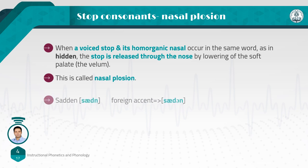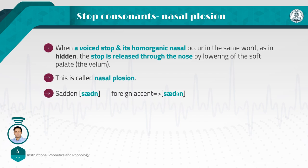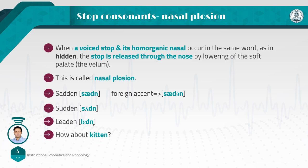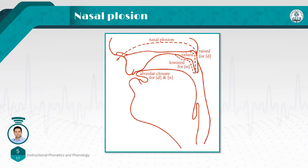Some examples of nasal plosion are 'sadden' and 'laden.' If you say 'sadden' — adding a vowel between /d/ and /n/ — that is considered a mark of a foreign accent. What about 'kitten'? Do you see any nasal plosion there? This figure illustrates nasal plosion.